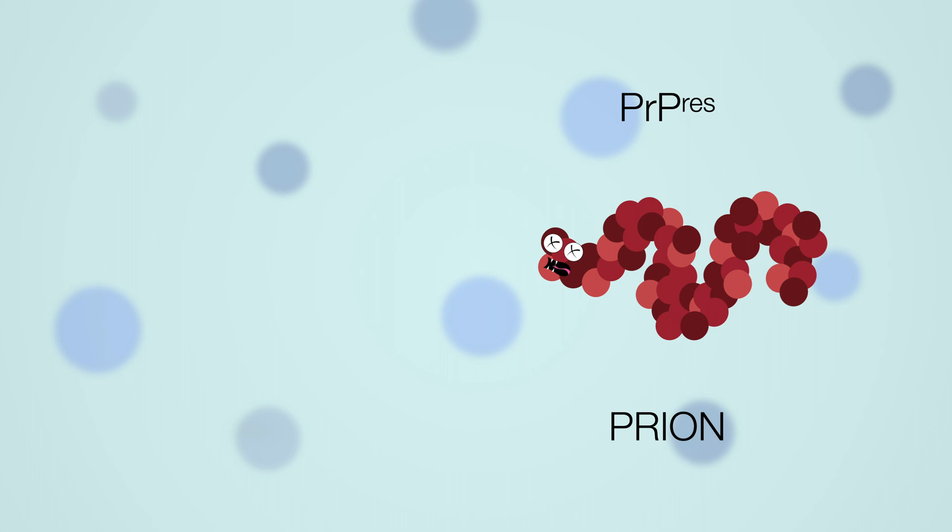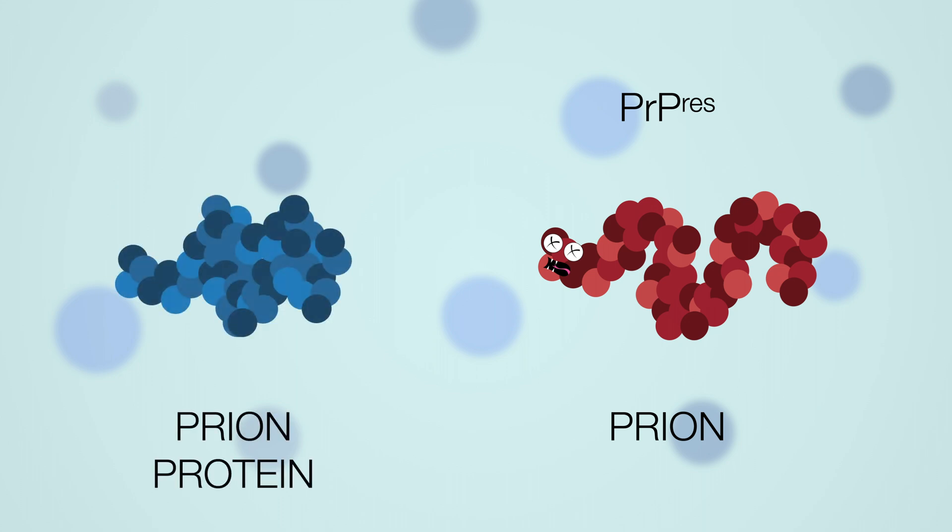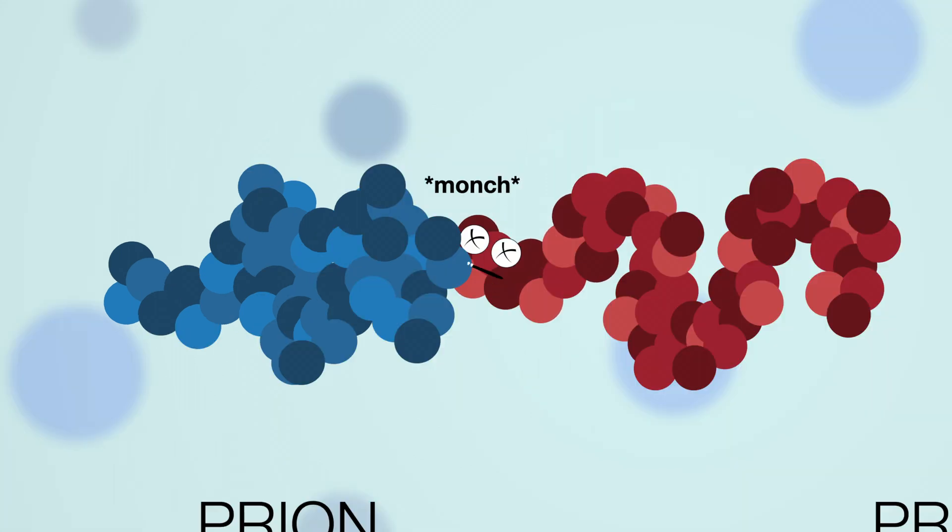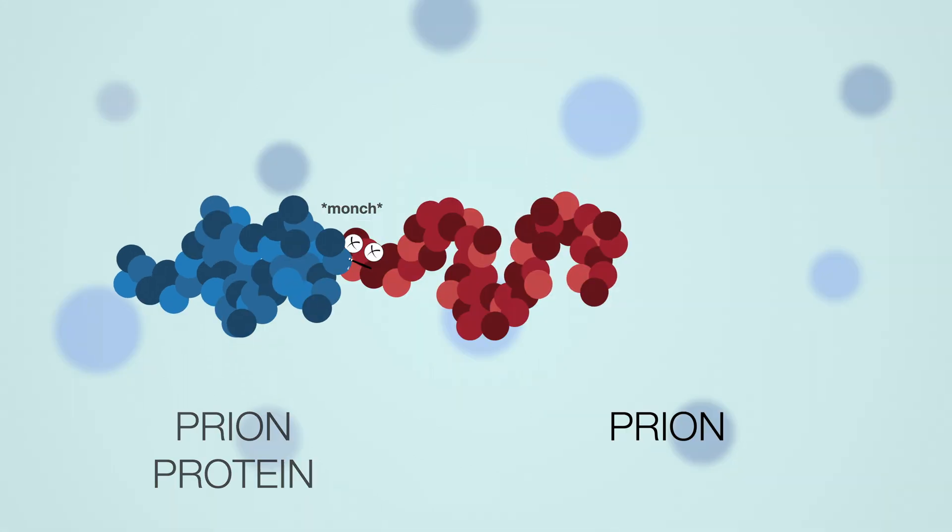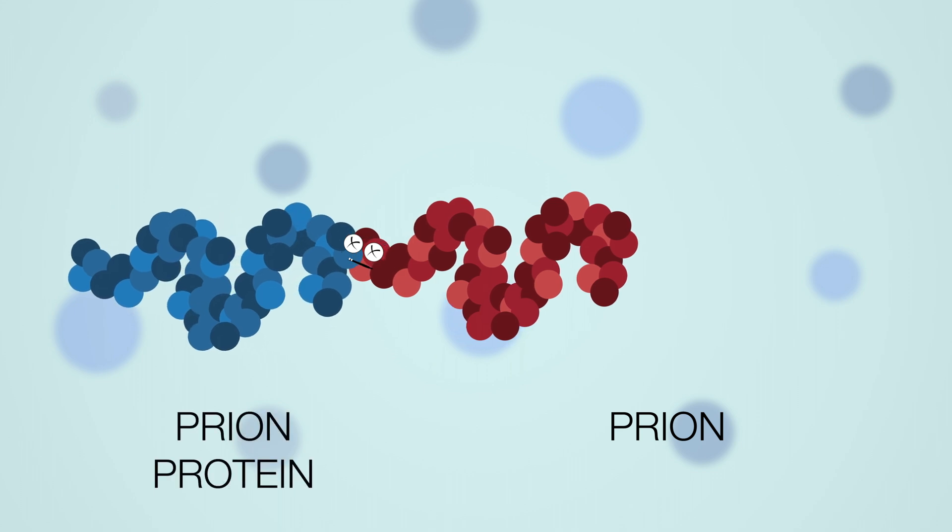And the fact that it cannot be destroyed is just half of the problem. The other half is that the freely roaming prion now finds healthy prion proteins, and somehow converts them into prions. I say somehow because the process is super unclear. And both of the existing theories are still very incomplete.